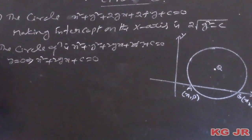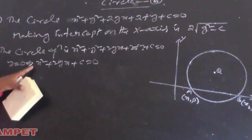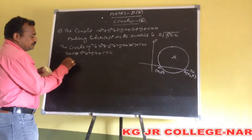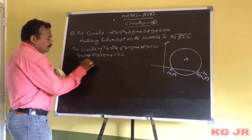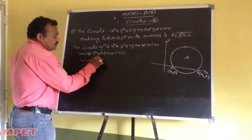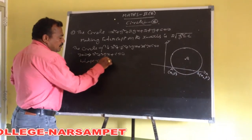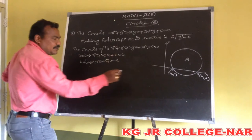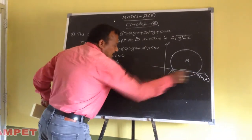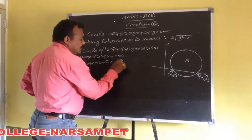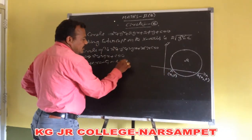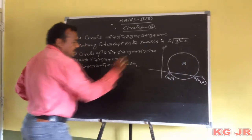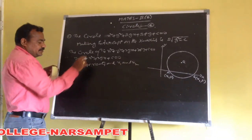We observe that this is a quadratic equation in terms of x, whose roots are the x-coordinates of a and b — that means x1 and x2.